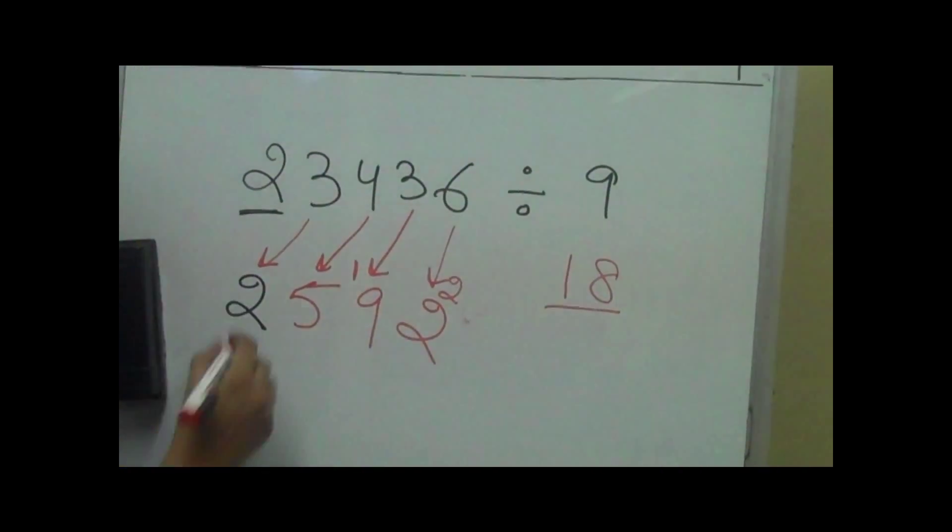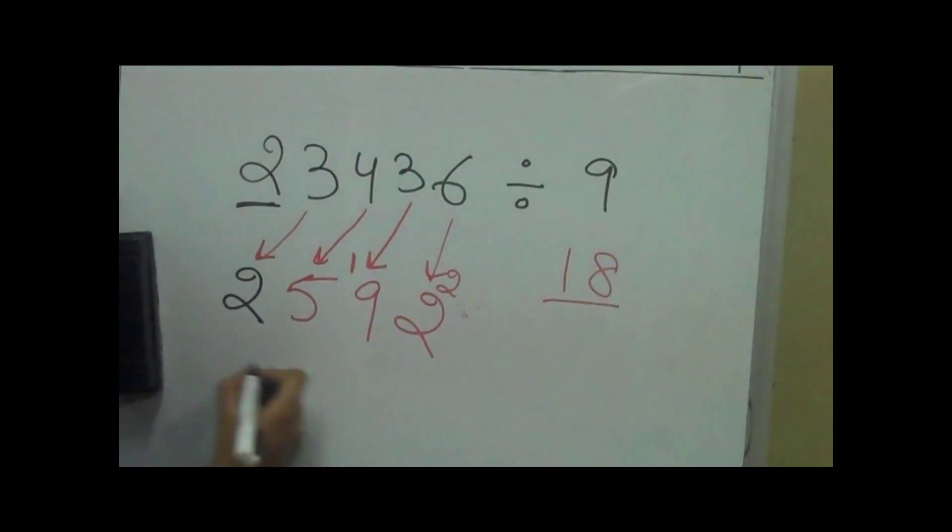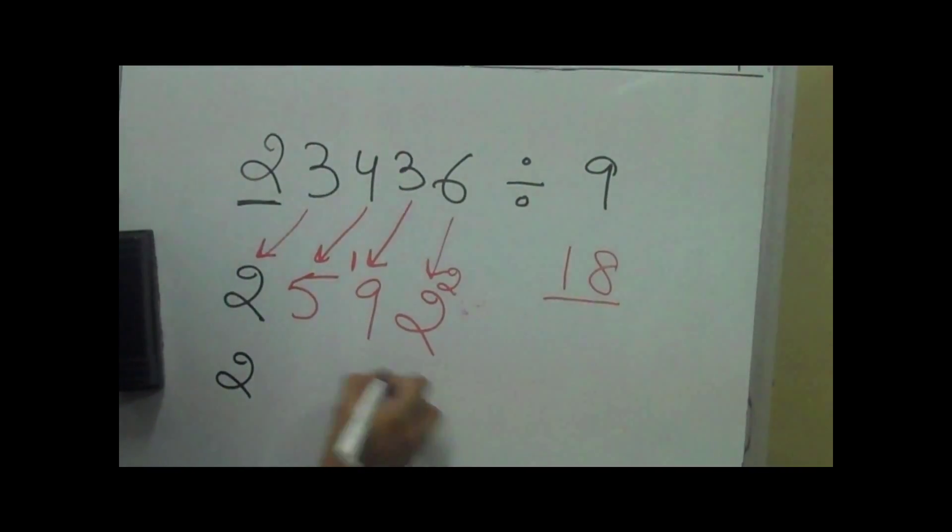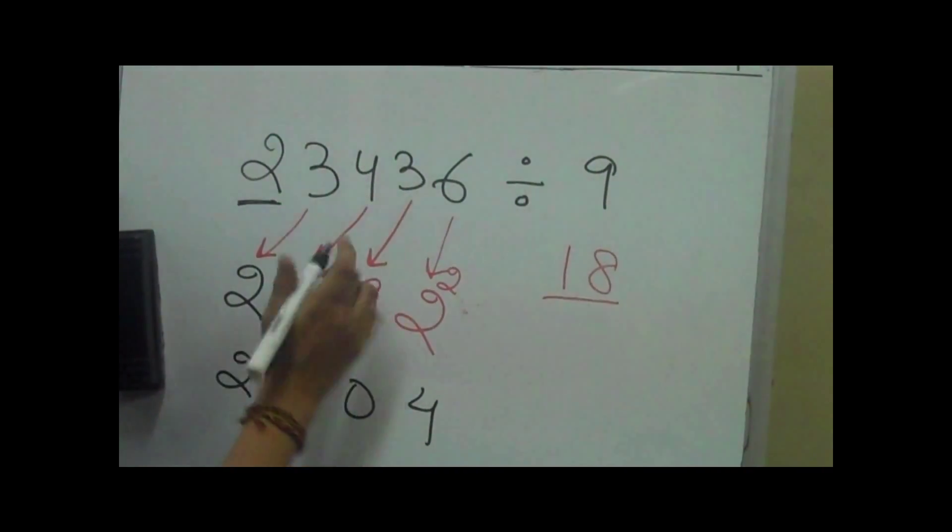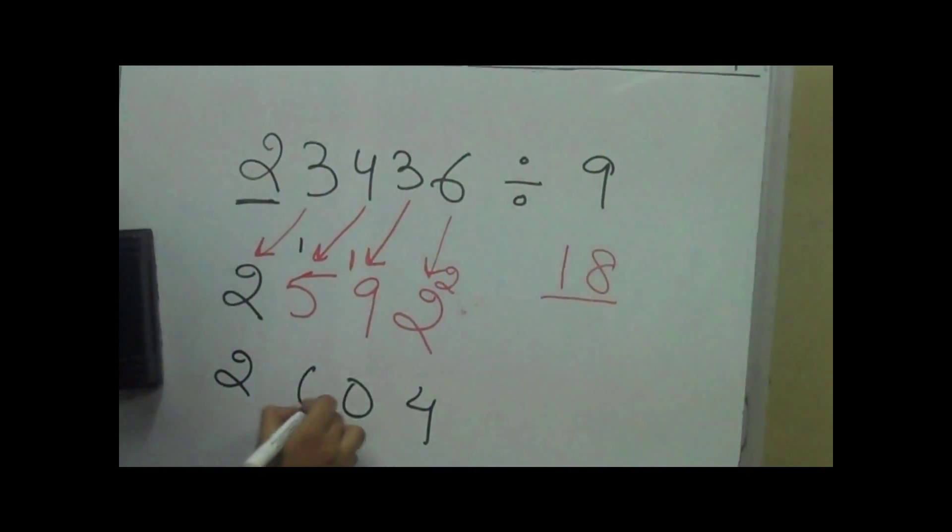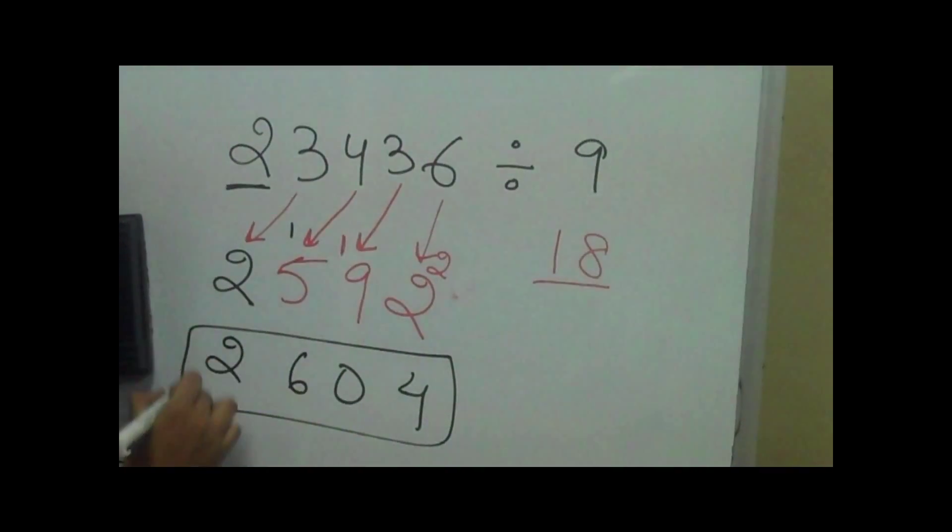So when we write 2, 4, 10, 9 plus 1 is 10, and then here 6, 2, 6, 0, 4 becomes the answer.